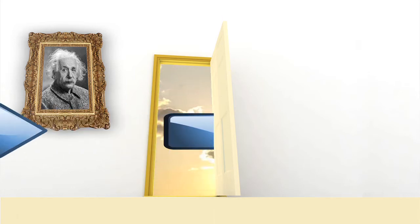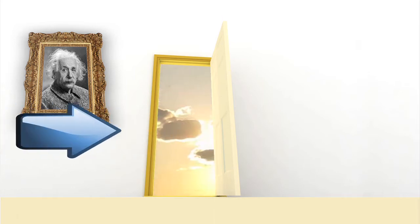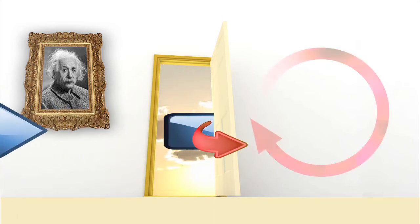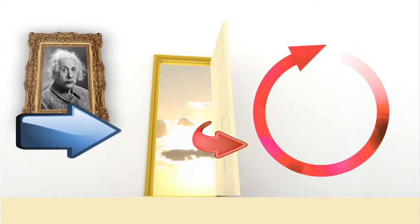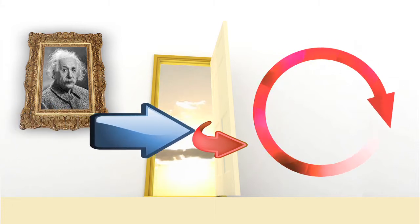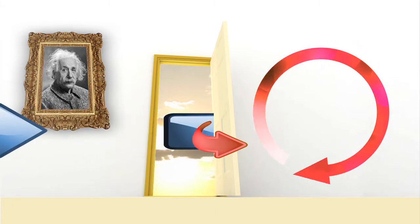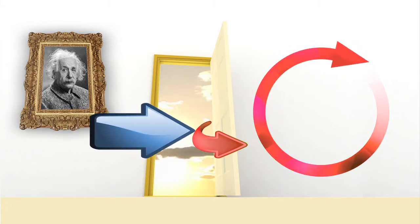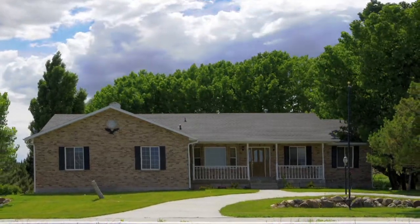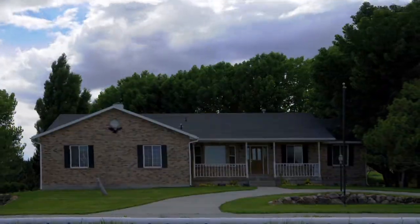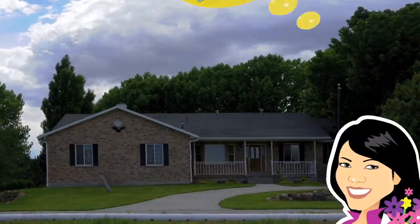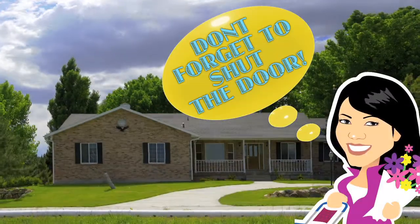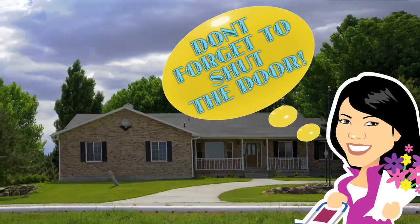Cold air will escape from the house and warm air will come into the house. The transfer of heat to the cold air is the process of thermal equilibrium. When the cold and hot air collide over time, they will balance out, resulting in a hot summer house.